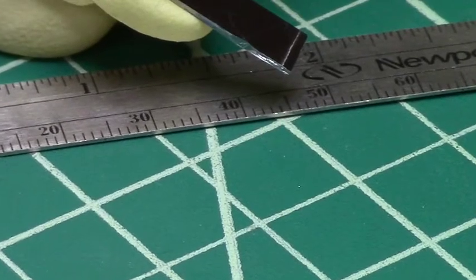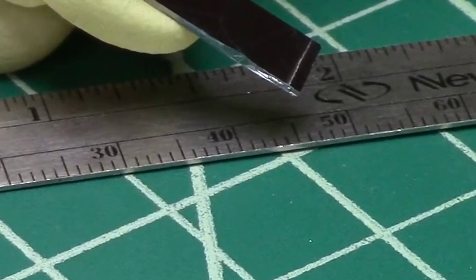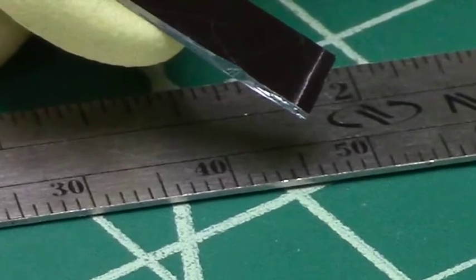Some samples don't cleave with just a short scribe, so a long scribe across the entire width of the sample is required.